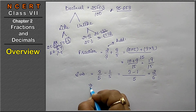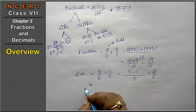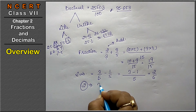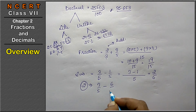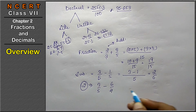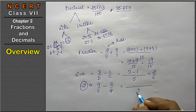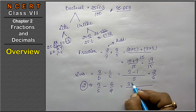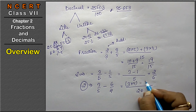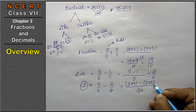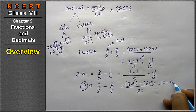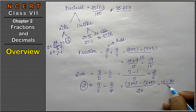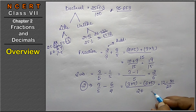If the denominators are not the same, for example 3 upon 5 minus 6 upon 4: the LCM of 5 and 4 is 20, then we get 3 × 4 minus 6 × 5 upon 20, which is 12 minus 30 upon 20, giving the answer minus 18 upon 20.